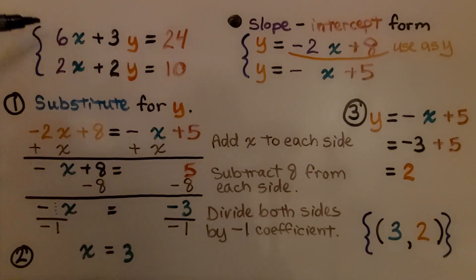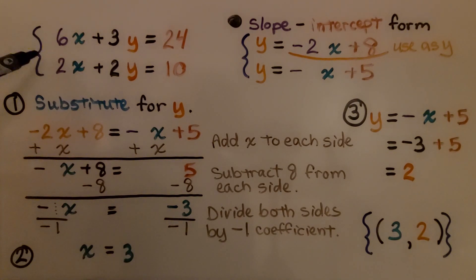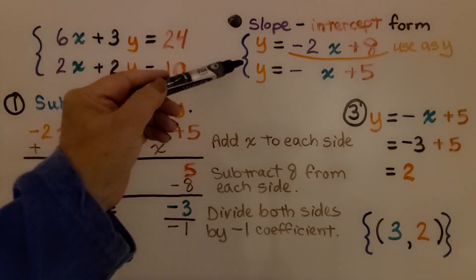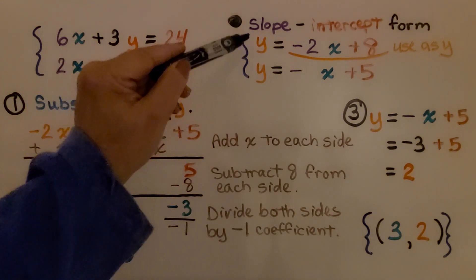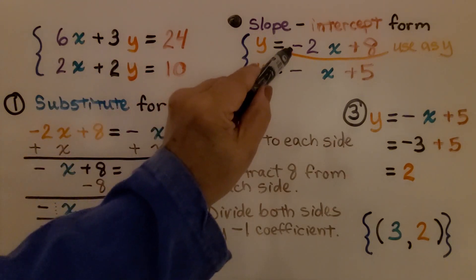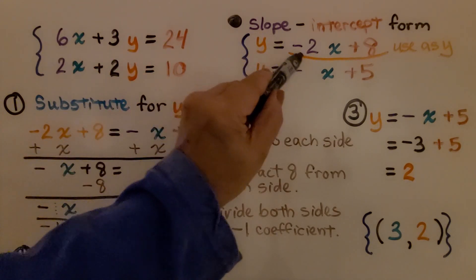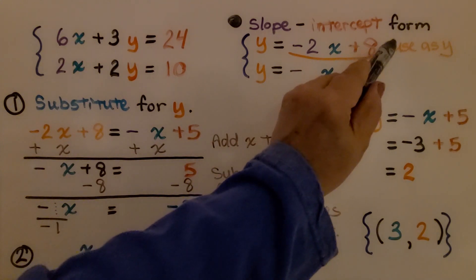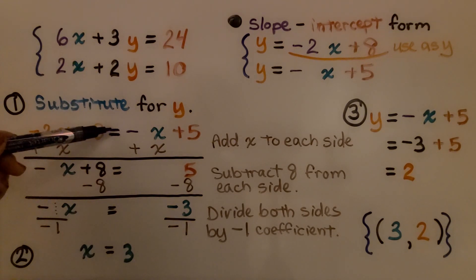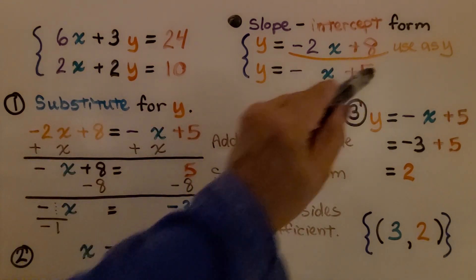Here's our new system of equations. Notice it's not in slope-intercept form, so we go through what we need to do to write it in slope-intercept form as we learned in the last lesson, and we get these two equations. I'm going to use negative 2x plus 8 as my y, so I write: negative 2x plus 8 equals negative x plus 5.